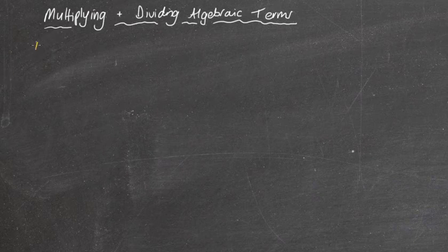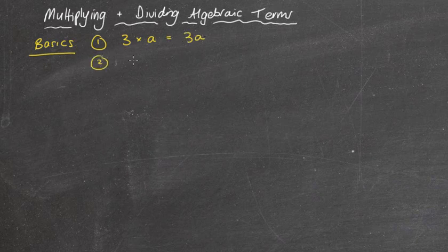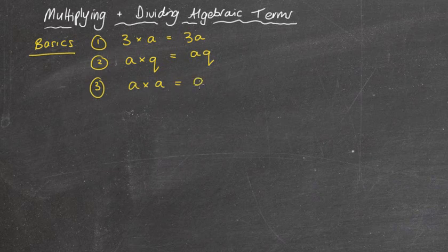A couple of basics for algebra that are very important. First, know that 3 times a is the same as 3a. a times q is the same as aq. a times a is the same as a squared. Remember, a plus a is 2a, whereas a times a is a squared because we're multiplying it by itself. Be very careful, that's probably the two most common mistakes at this level of mathematics. It's very important to know the difference. Getting through those three rules can help you with most things with multiplying.